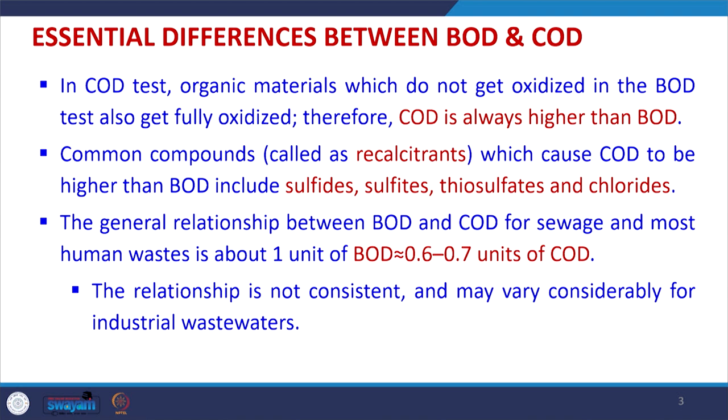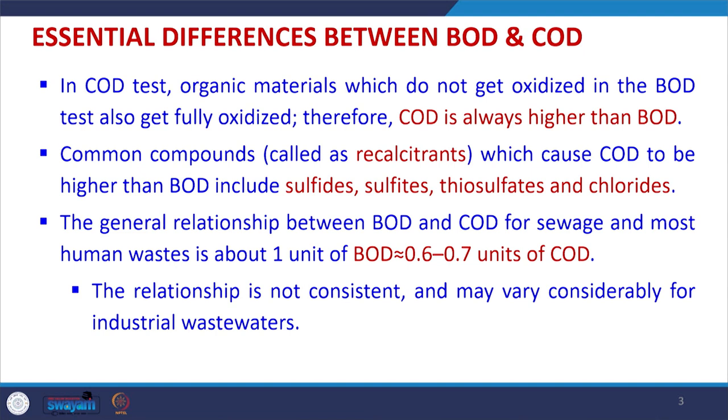The BOD/COD relationship is not constant and may vary considerably with industrial wastewater. Determining the BOD/COD ratio is very important. If the BOD/COD ratio equals 0.3, the amount of biodegradable organic matter is very low in the water sample and biological treatment is not appropriate — chemical and physicochemical treatment would be required. This low ratio represents a wastewater containing a lot of recalcitrants.